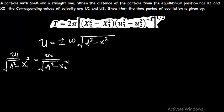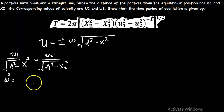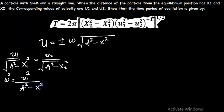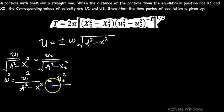Next, we need to solve for omega squared, which is the angular frequency squared. Squaring both sides, this gives us v1 squared divided by A squared minus x1 squared, equals v2 squared divided by A squared minus x2 squared.